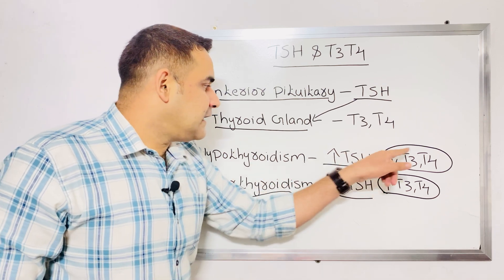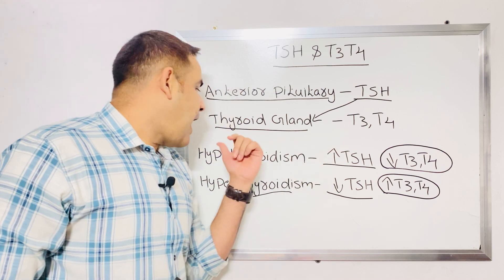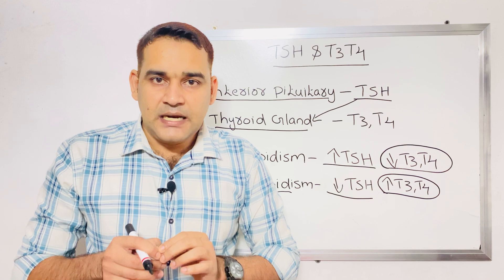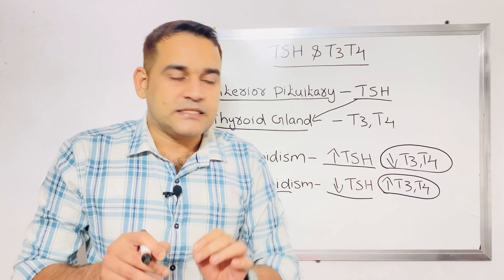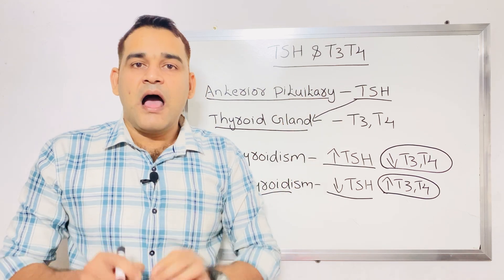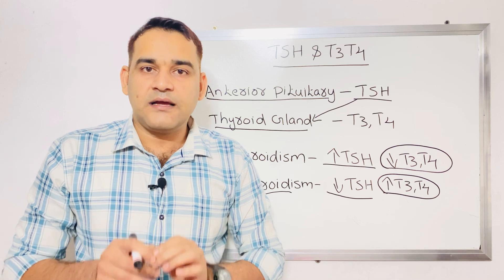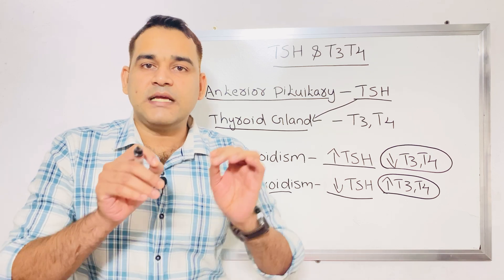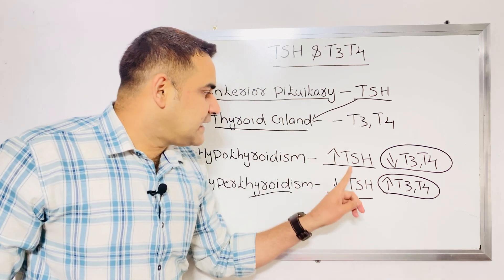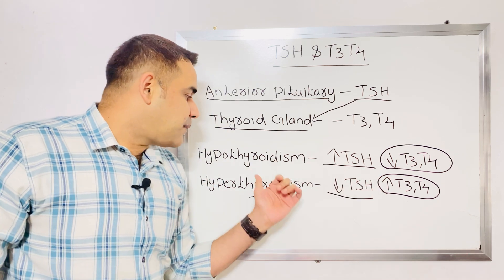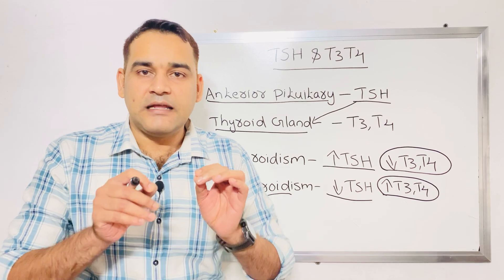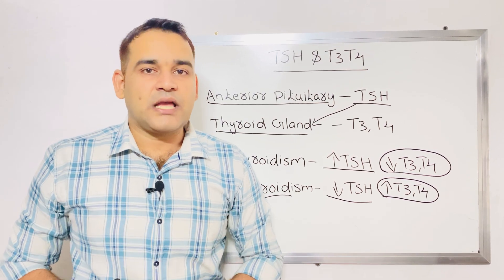For your exam, the most important things are: TSH is secreted by the anterior pituitary gland. If the lab value shows TSH increased and T3 and T4 decreased — that is hypothyroidism. If TSH is decreased and T3 and T4 are increased — that is hyperthyroidism. That's all regarding the difference between TSH, T3 and T4. We will meet soon with another video. Thank you and goodbye.